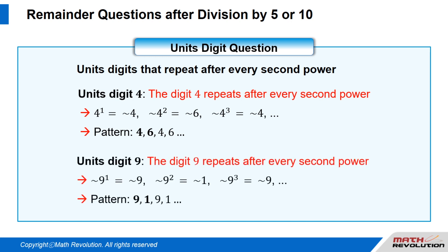Units digit 9: the digit 9 repeats after every second power. That is, 9 to the power of 1 equals 9, 9 to the power of 2 equals 1, and 9 to the power of 3 equals 9, and so on. Thus, the pattern is 9, 1, 9, 1.